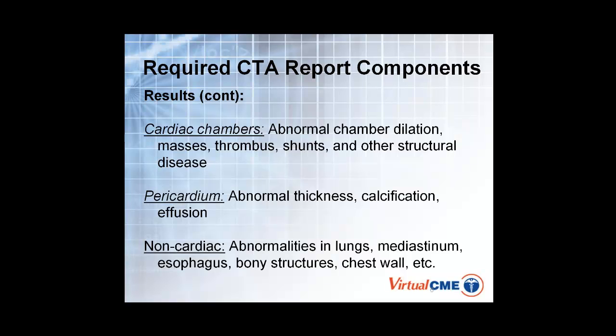A lot of these scans are not full chest, so you're going to miss the apices of the lungs and may have some of the lateral walls cut out in the viewing field. But if you do see abnormalities in the lungs such as masses, anything in the mediastinum, an esophagus problem like we described in the first case, or bony structure changes in the chest wall, those should all be included as part of the report.